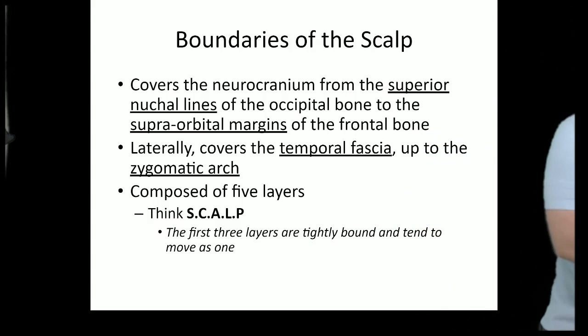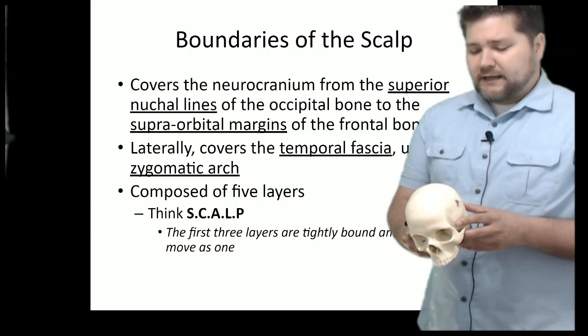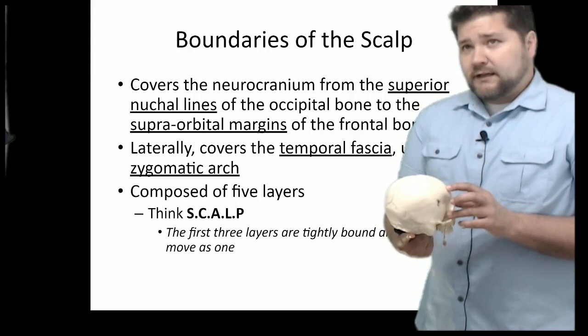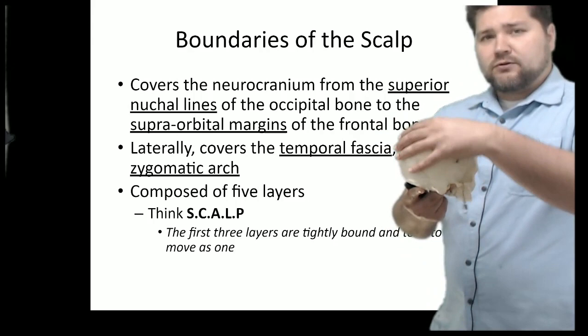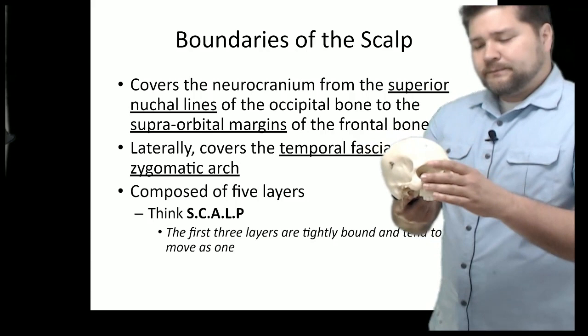Let's break down what the actual scalp is. The scalp is the structure — basically the skin and everything underlying it — that overlays what we call the neurocranium, which is the skull part of the skull. The viscerocranium is the facial component. We'll go into the skull in a later lecture, but here we can look at the basics.